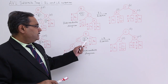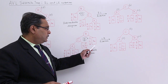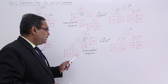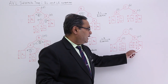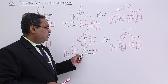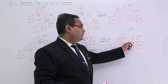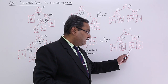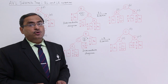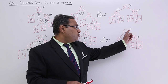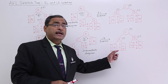Now go for the last rotation. C will be going up, B will be coming down with BR. A is there, C has gone up, B has come down with BR. What about CR? It is greater than C, lesser than B, so CR will be coming down. Now calculate the balance factors. You will find that no balance factor is equal to minus 2 or plus 2. So the tree is height balanced.